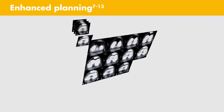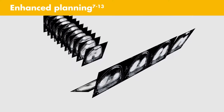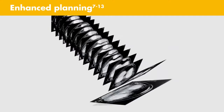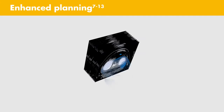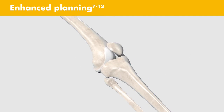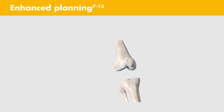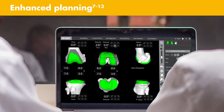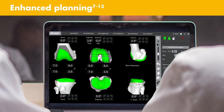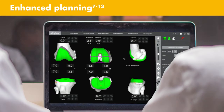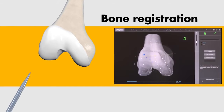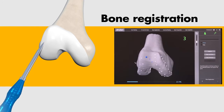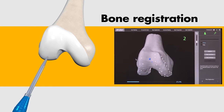With enhanced planning, CT data is segmented to create a 3D model of the patient's bony anatomy. The Mako Total Knee application allows you to position the Triathlon implant on your patient's virtual anatomy prior to the procedure. This patient-specific preoperative plan enables more accurate implant positioning during surgery, and bone registration and verification are designed to align the 3D model with your patient's knee.